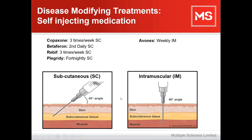With subcutaneous therapies, we have Copaxone, now only available three times a week — commonly Monday, Wednesday, and Friday. There's also Betaferon, which is every second day; Rebif, every third day; and Plegridy, which is once a fortnight. We also have Avonex, which is a weekly intramuscular injection that goes a little bit deeper.